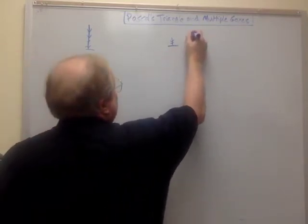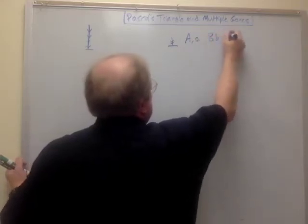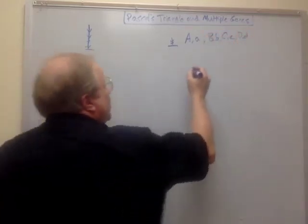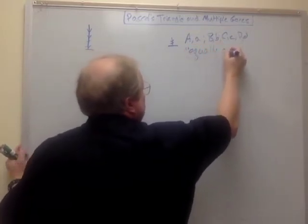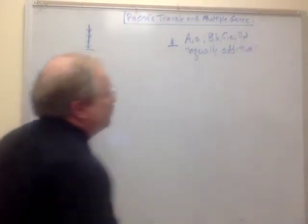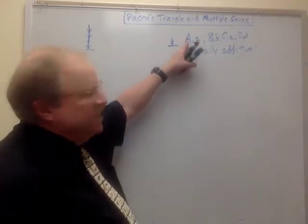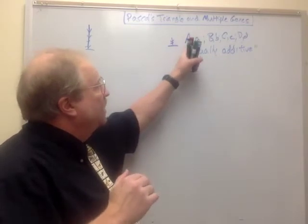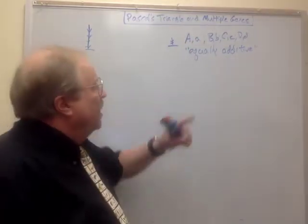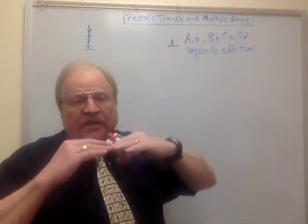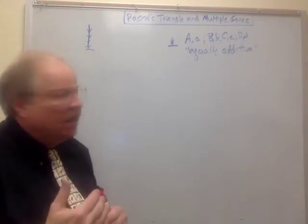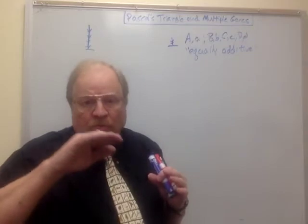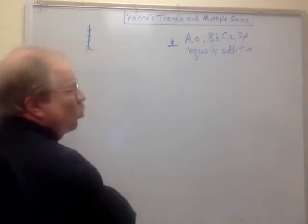We have the big A gene, the big B gene, the big C gene, and the big D gene. These four genes work in a fashion we're going to call equally additive. That is, you can think of each one of these capital letter alleles as adding a certain amount to the height of the plant. It doesn't matter if it's big A, big B, big C, or big D — each one adds the same amount. So they're working additively, making this a great example of multiple genes determining one continuous quantitative trait.